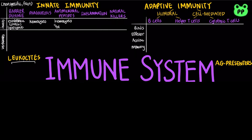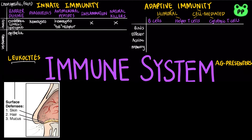Fruit flies use toll receptors to recognize different infections. Insects and most invertebrates don't have an inflammation response and natural killer cells. For vertebrates, barrier defenses include epithelial tissues of our skin and mucus that traps microbes, as well as body fluids such as saliva,